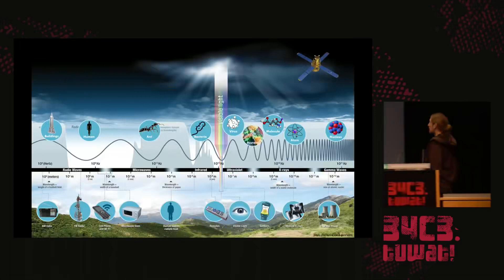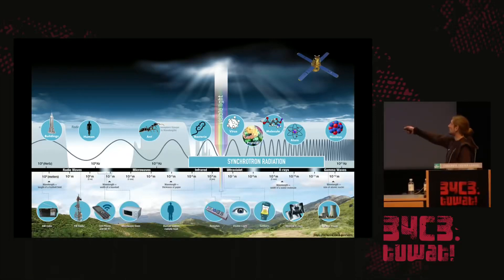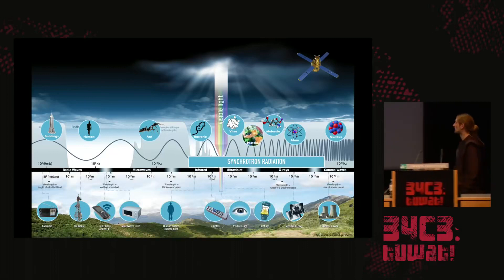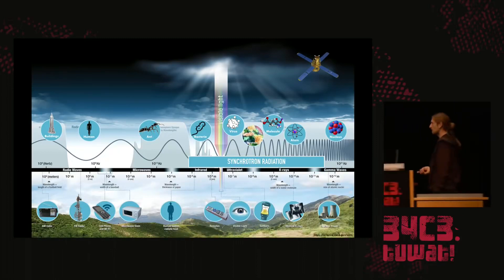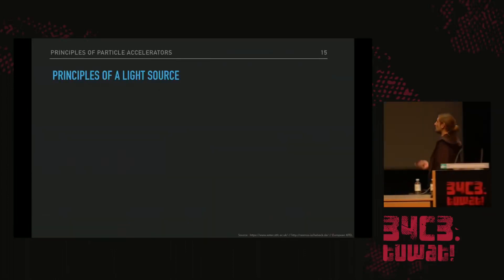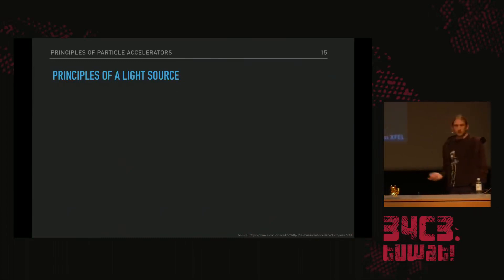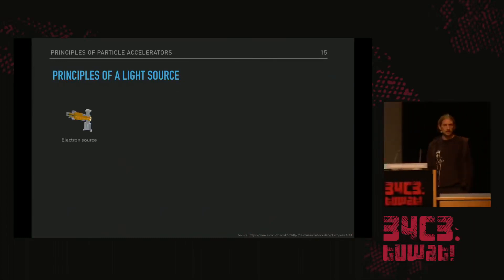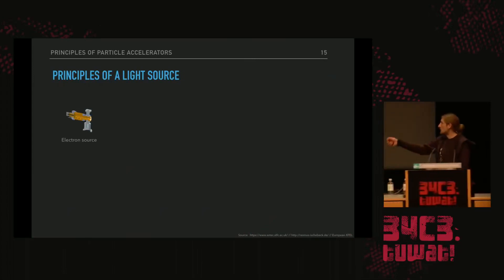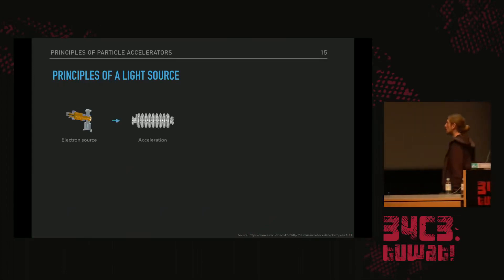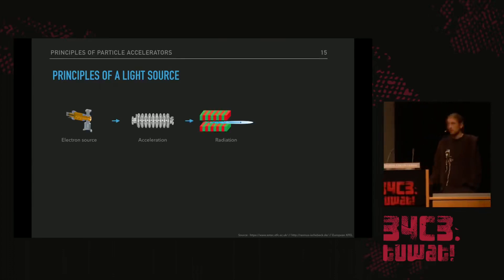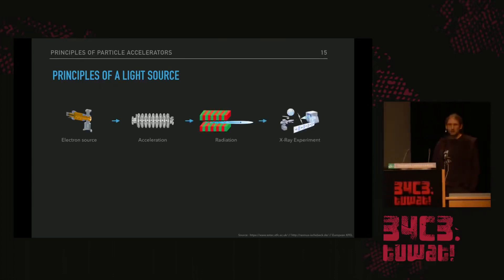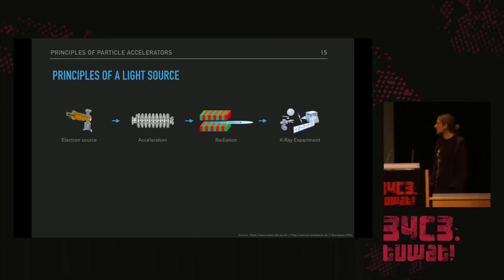Coming back to the main picture: synchrotron radiation is well-suited to study small things like proteins or molecules. The principles of a light source are: first, generate electrons with an electron source; second, increase their energy with an accelerator; and third, make them radiate with a dedicated device. With that radiation we perform X-ray experiments. It's not a bad analogy to think of a light source like a radio station: you have an input signal, high-power amplification, and then a device designed to produce electromagnetic radiation.